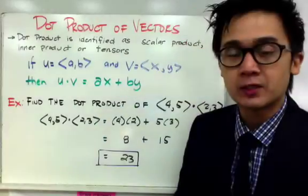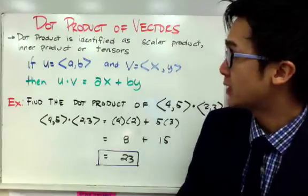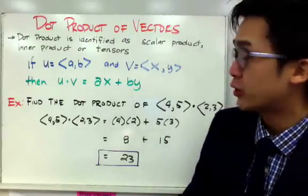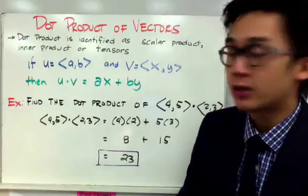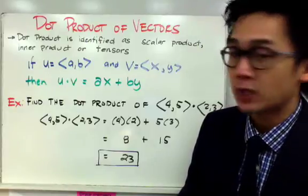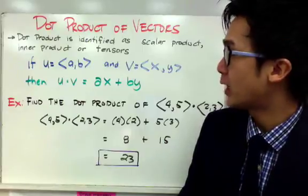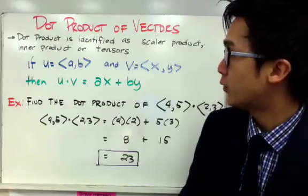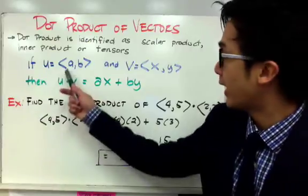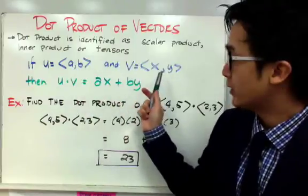One of the operations that you need to learn about vectors is performing the dot product. Dot product is identified as scalar product, inner product, or tensors. If we have two vectors, let's say u = ⟨a,b⟩ and vector v = ⟨x,y⟩, to find the dot product u·v, all you have to do is multiply a and x and add it to the product of b and y.